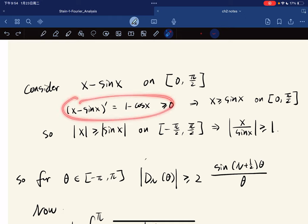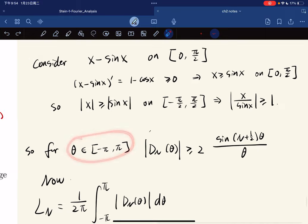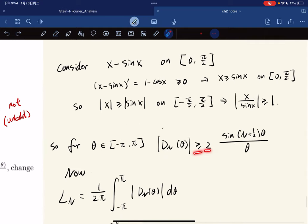First, we consider the function x minus sin(x) on [0, π/2]. Its derivative is greater than 0, which means that x is greater than sin(x). If we extend this and put absolute value, we have this, which means that |x/sin(x)| is greater than 1.